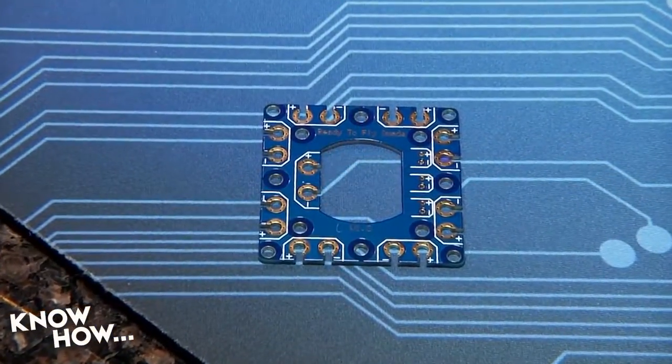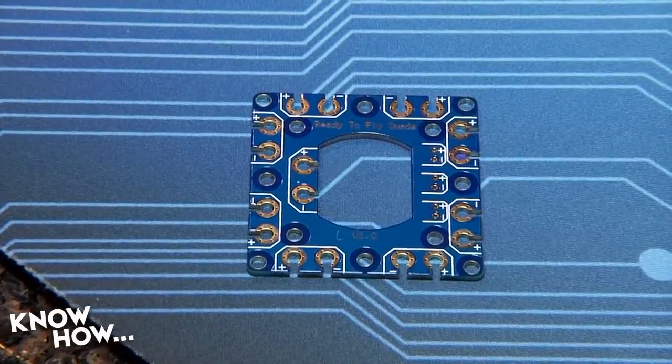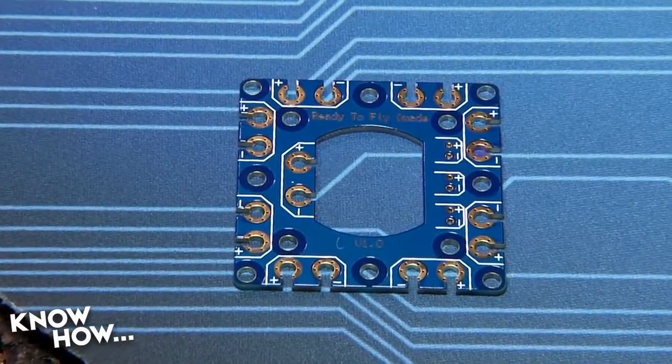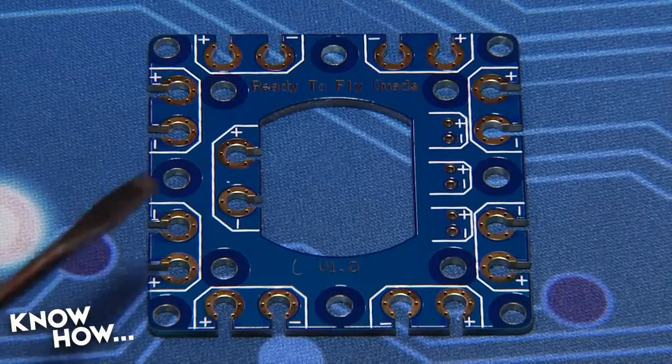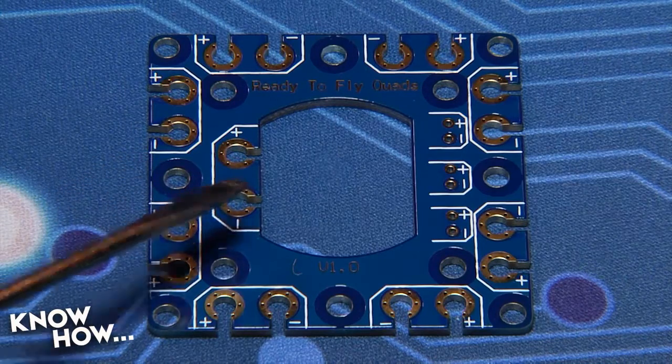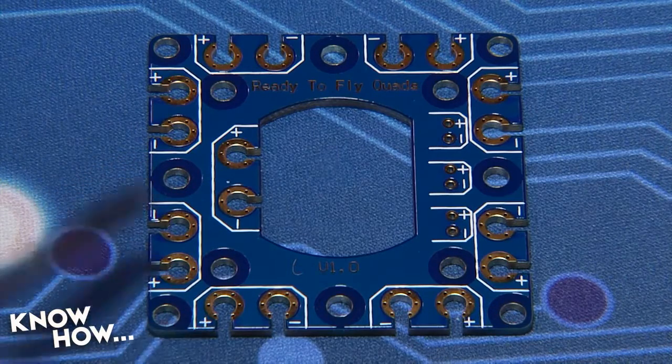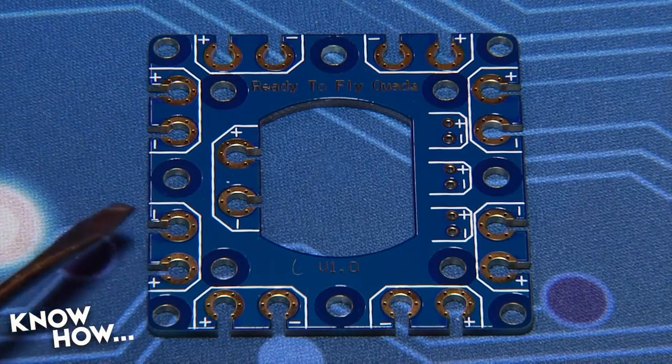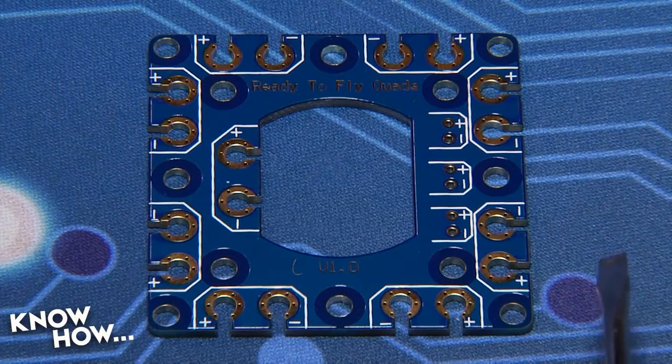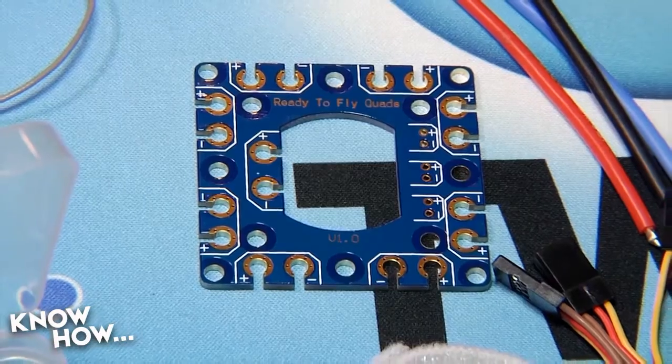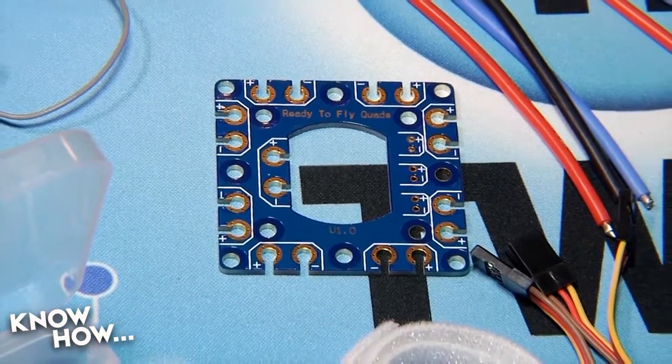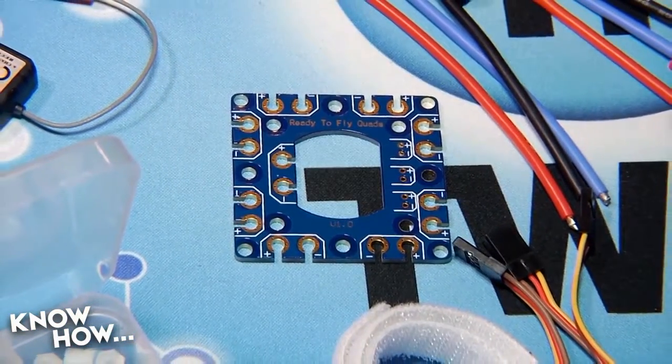Our power harness starts with a 45mm power distribution board. If you've chosen ESCs that don't provide 5V power back to the flight controller, you'll probably want a power distribution board that will. But basically, any power source you connect to the positive and negative leads on the inside of any board will be distributed to any of the devices that are connected to the positive and negative leads on the outside of the board.